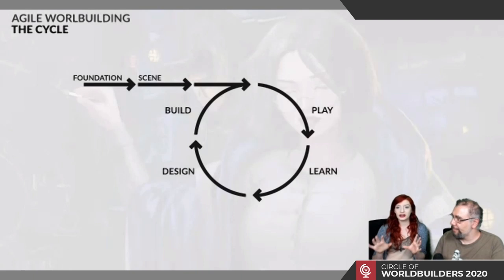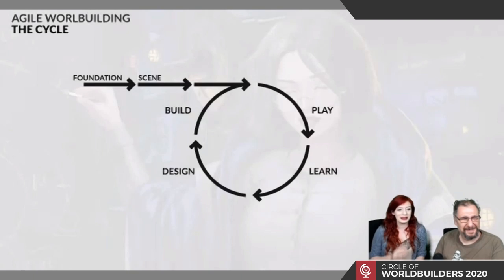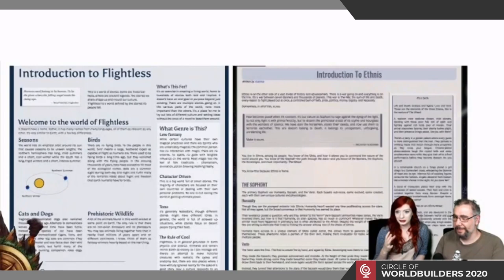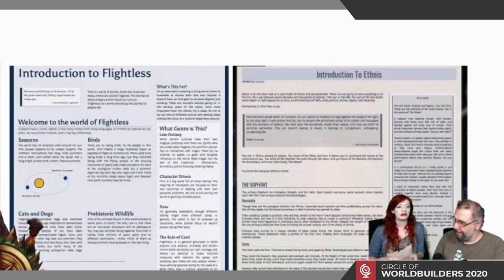Once you've created your Foundation article and your Scene article, you have a basic idea of what your world looks like — why you're building it, who lives there, a little about their history, the main drama and current affairs of your world. The next step is to create a Primer — a small document, not the Silmarillion.